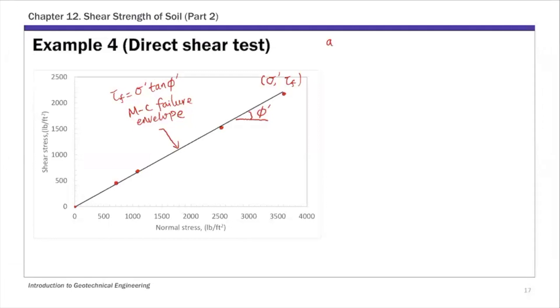This is part a. From the failure envelope, c prime is zero and phi prime is 32 degrees. That is the shear strength parameter from this direct shear test, that's part a.